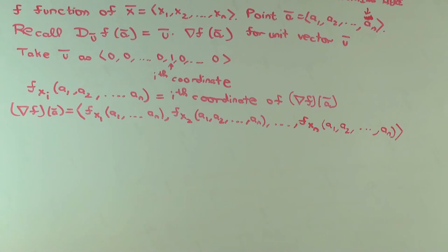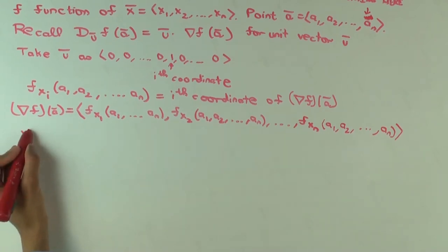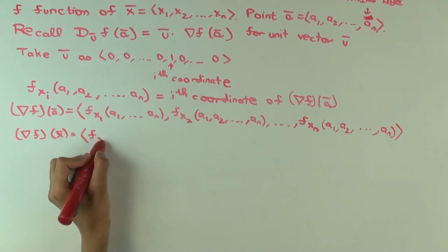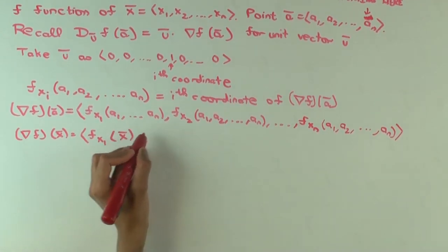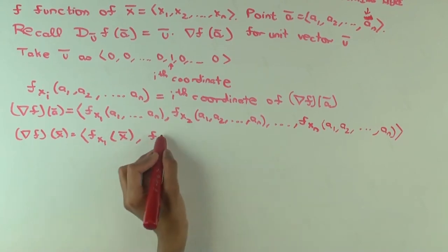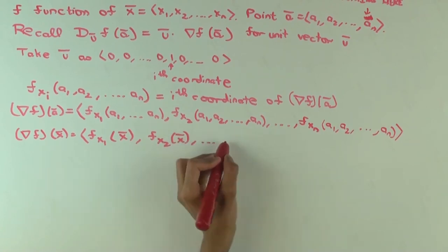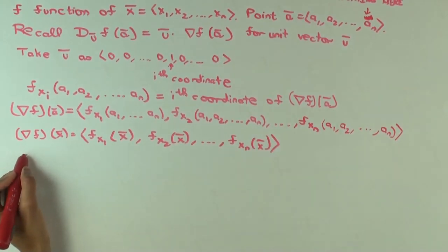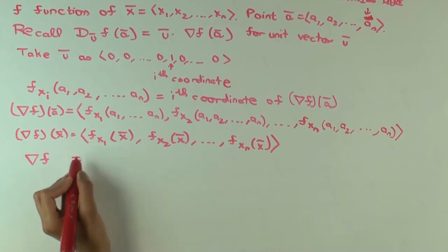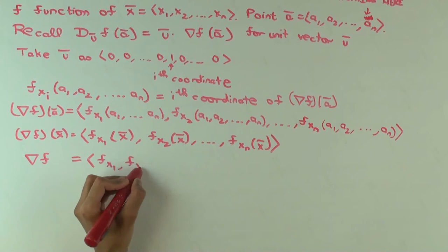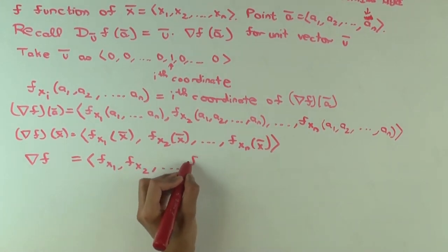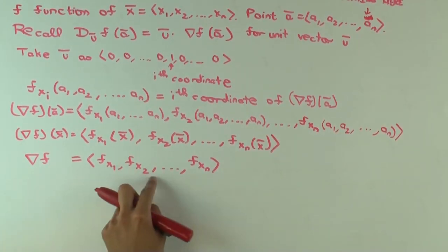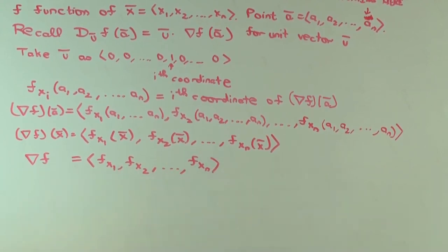If you want, you can do this at a generic point. So nabla f of x is (f_{x1}(x), f_{x2}(x), ..., f_{xn}(x)). And if you want even shorter notation, you can write it point-free: (f sub x1, f sub x2, ...). This vector-valued function is just a function whose individual coordinates are the scalar partial derivative functions.